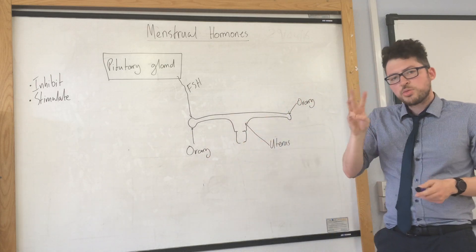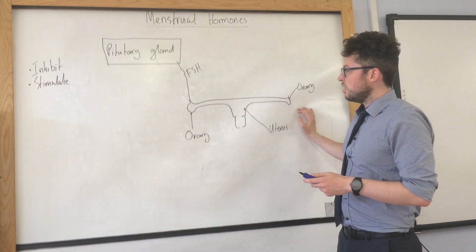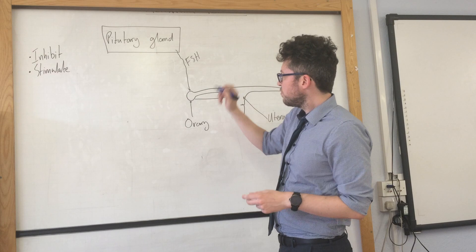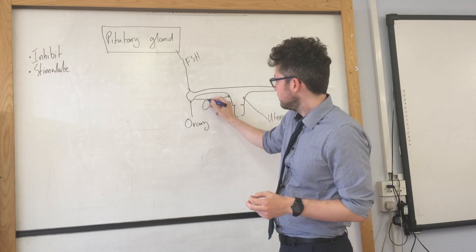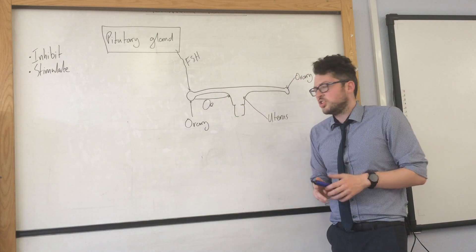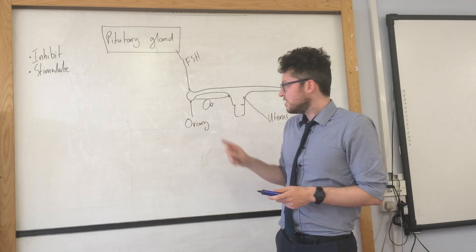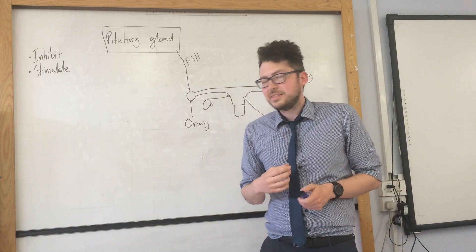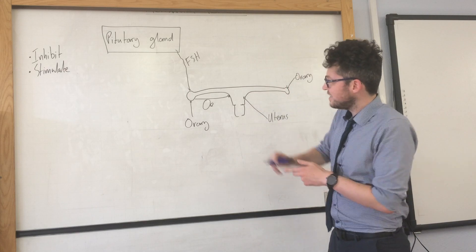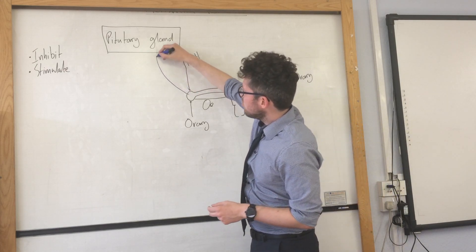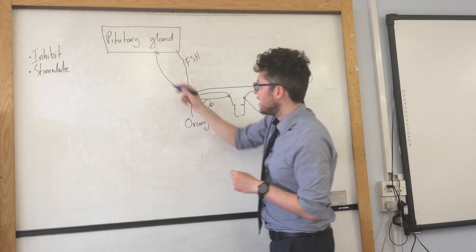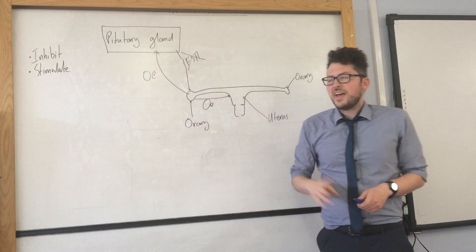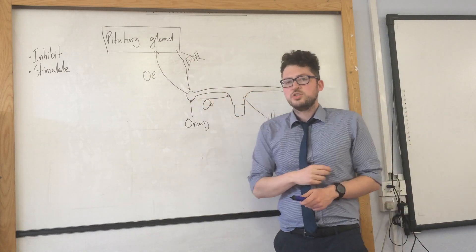Oestrogen has three effects. First, oestrogen thickens the lining of the uterus to make it ready for an egg to implant. Second, it inhibits FSH, which means that it reduces the production of FSH by the pituitary gland.